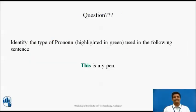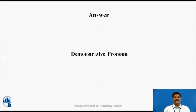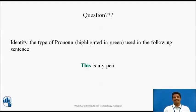Now here is a question for you to think over. Identify the type of pronoun highlighted in green used in the following sentence: 'This is my pen.' I would request you to pause this video, open your course journal and write the answer. Welcome back. The answer is Demonstrative Pronoun. 'This' is a Demonstrative Pronoun in this particular sentence.